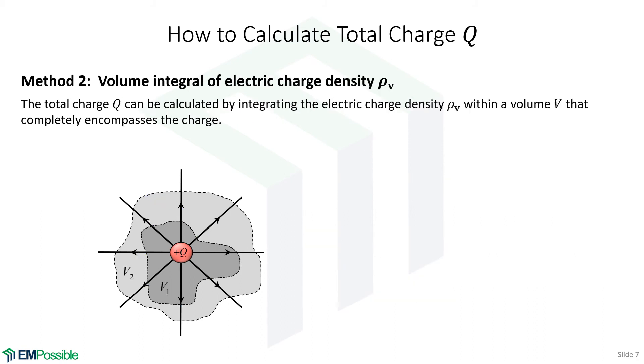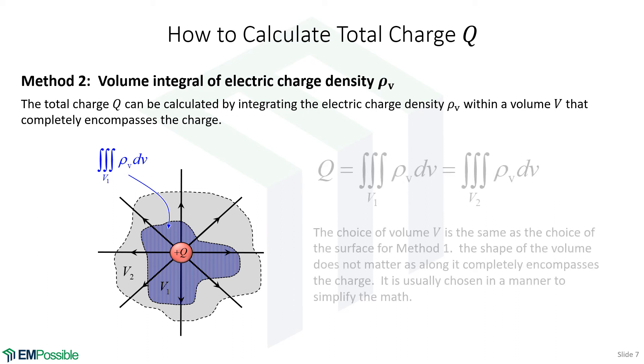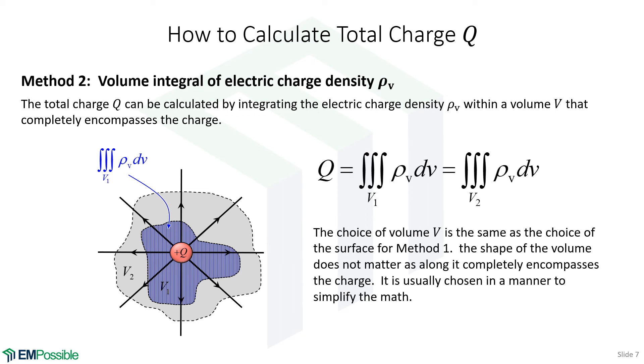There is a second way to calculate the total charge enclosed within a surface. Now, here, instead of thinking along the surface of these surfaces we've defined, let's think about integrating through the volume. It turns out if we integrate the electric charge density throughout the same volume that was enclosed by the surfaces we just talked about, we will also calculate total charge. So mathematically, we could write it this way. Now we're talking about triple integrals over the volume, integrating the charge density throughout the volume V1. It doesn't matter which volume we choose. As long as that volume completely encloses the charge that we're talking about, we will always get that same total charge.